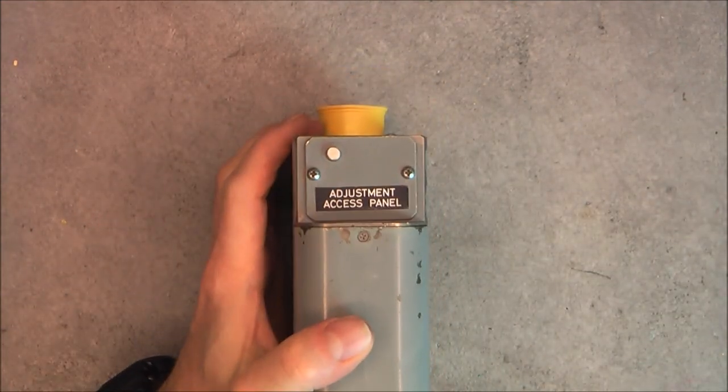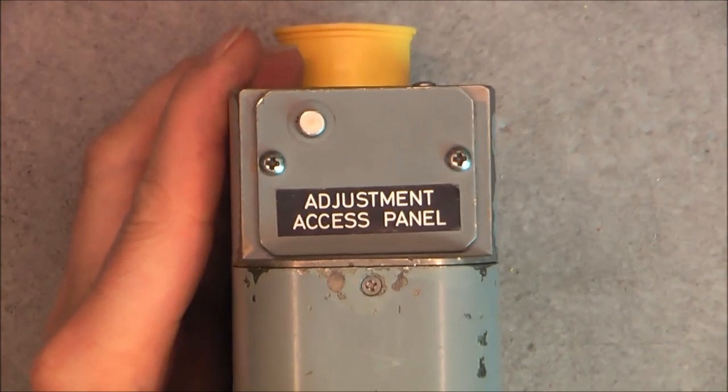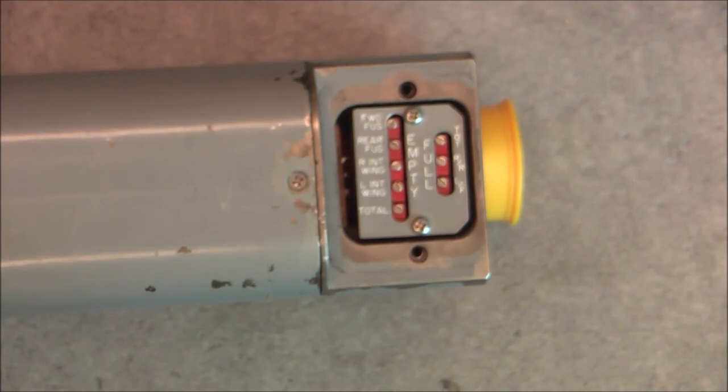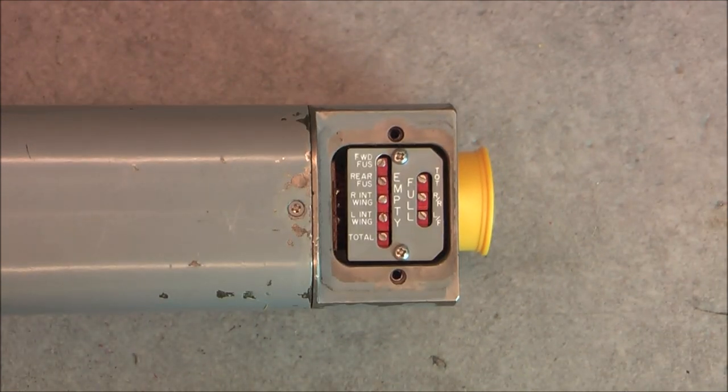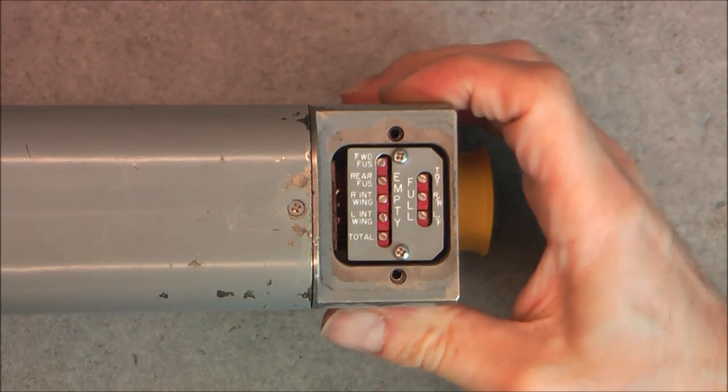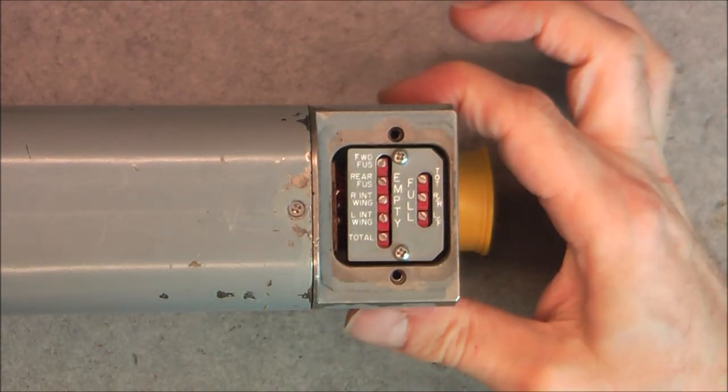Here we have a little panel that is called the adjustment access panel, which will allow you to access some adjustments. Actually trim pots between full and empty for forward fuselage, rear fuselage right and left, internal wing, total. And total, RR, LF, full, between empty and full. You can see by the way the construction of this back piece, a solid piece of aluminum.